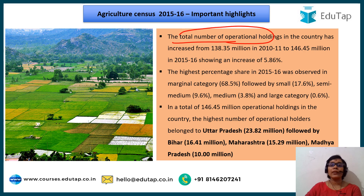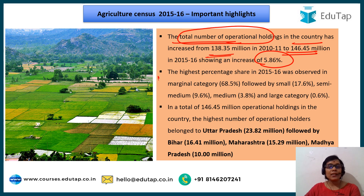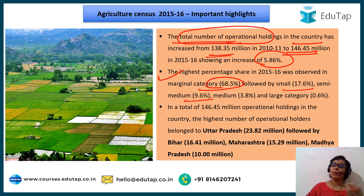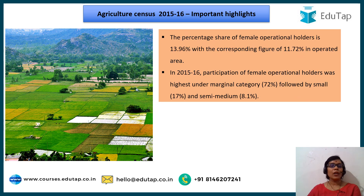The total number of operational holdings in the country has increased to 148 million from 138.35 million earlier, showing an increase of 5.86%, and this is one of the key reasons for the decreasing average land holding area in our country. The highest percentage share in total number of operational holdings is from the marginal category at 68.5%, followed by small, semi-medium, medium, and large. Among states, Uttar Pradesh has the highest number of operational holdings at 23.82 million, followed by Bihar, then Maharashtra and Madhya Pradesh.